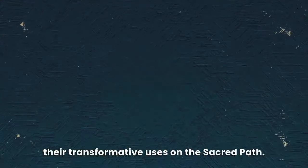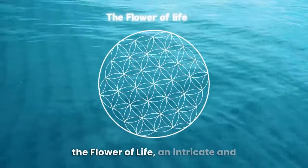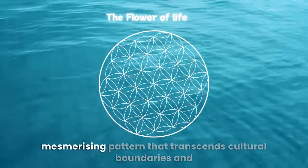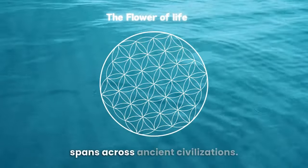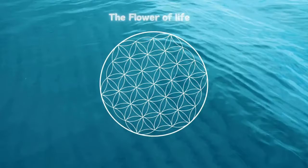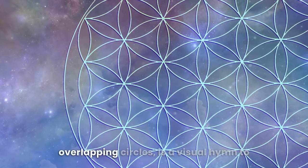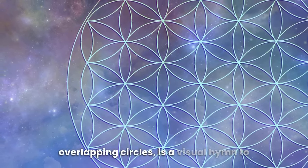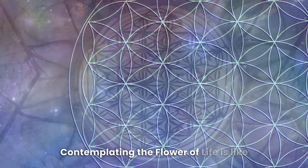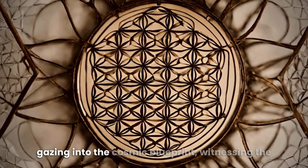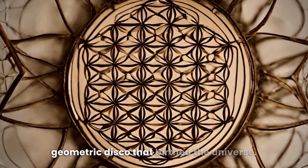At the heart of sacred geometry lies the flower of life, an intricate and mesmerizing pattern that transcends cultural boundaries and spans across ancient civilizations. This sacred symbol, composed of evenly spaced overlapping circles, is a visual hymn to the rhythm of creation itself. Contemplating the flower of life is like gazing into the cosmic blueprint, witnessing the geometric dance that birthed the universe.